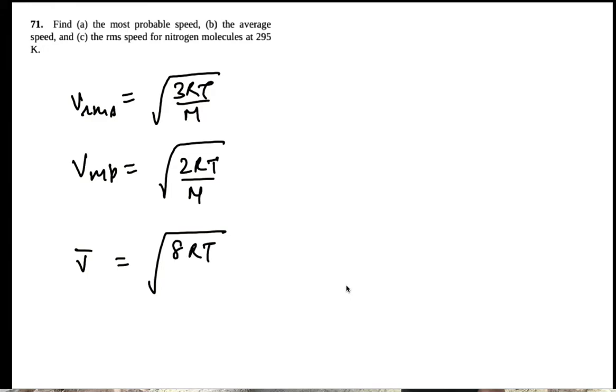The VRMS speed is given by square root of 3RT by the molar mass. The most probable speed is given by square root of 2RT over m, and the average speed is given by square root of 8RT by pi m.